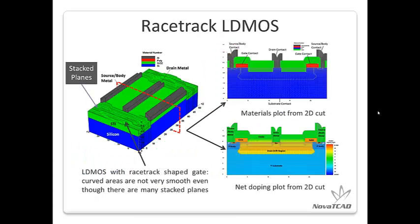The second example is a racetrack LDMOS, named because the gate is shaped like a racetrack. The 2D cross-sectional cuts are shown on the right-hand side with the material plot and net doping plot. Notice that the curved area of the gate covered by oxide is not particularly smooth. However, we now have a better way called taper connect to make it smoother, though we intend to keep it as-is for comparison with our new bent plane method.